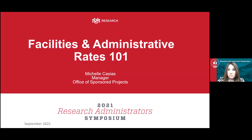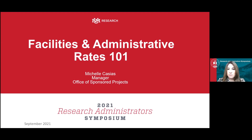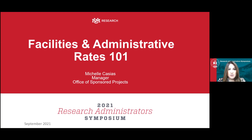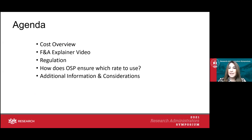We are recording. This is going to be a high-level presentation on F&A. What we're going to cover is focused on how we develop the rate as an institution, how we apply it on a proposal, and where the rules come from. The agenda covers cost overview, an F&A explainer video from COGR and other national organizations, regulations and policy, and practical application.